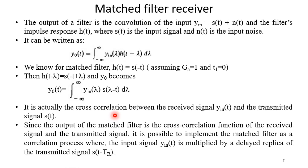It is actually the cross correlation between the received signal y_in and the transmitted signal s(t) since the output of the matched filter is the cross correlation function of the received signal and the transmitted signal